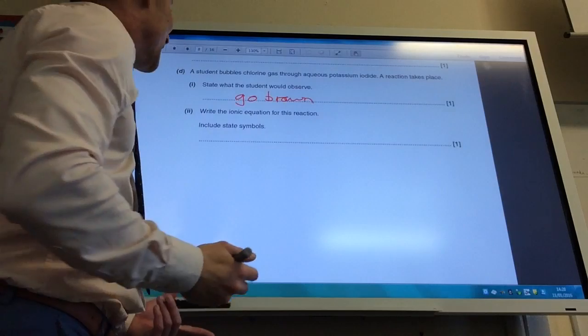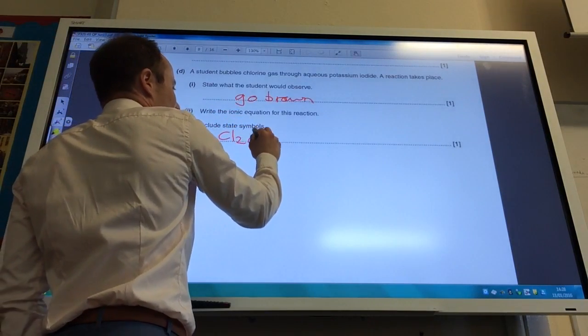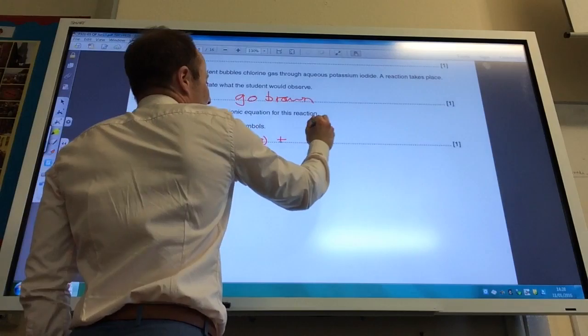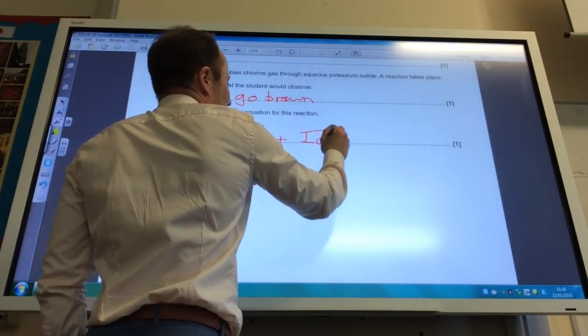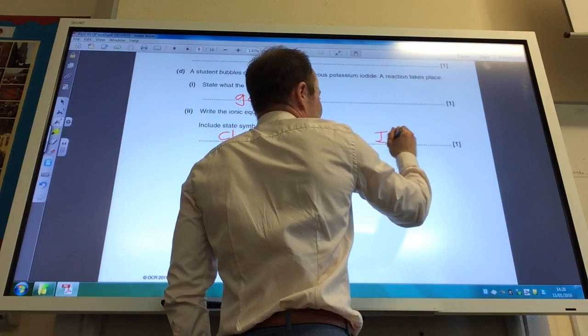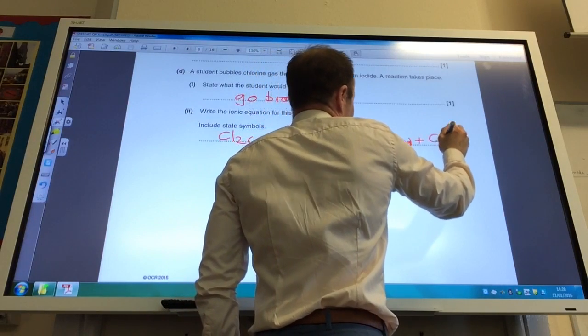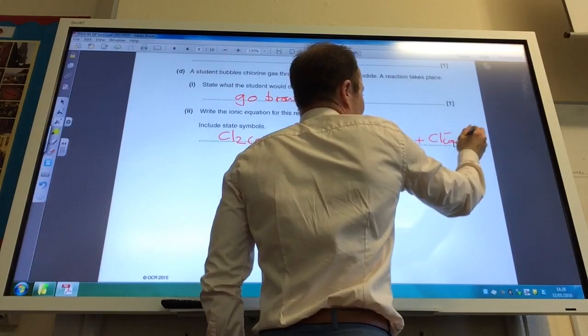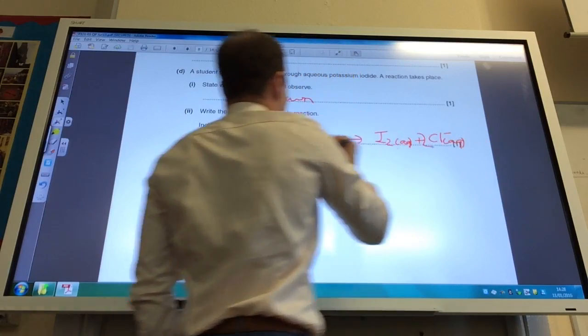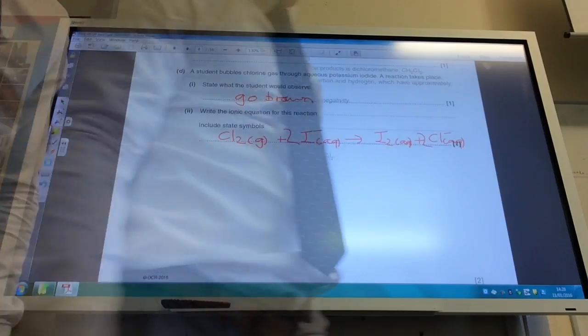Write an ionic equation, including state symbols. So I'm starting with chlorine, which they've told me is gaseous. I'm adding it to iodide ions, which are aqueous. That's going to give me iodine, aqueous. That's what's made it go brown, plus chloride ions, aqueous. To get it to balance, I need two of those and two of those.